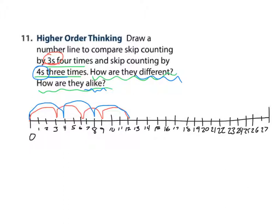Notice, one number line shows 3 jumps. One number line shows 4 jumps. Also notice that something that's similar is they both land on 12.